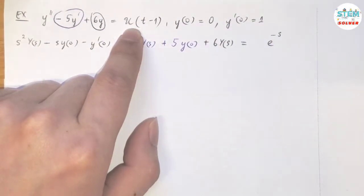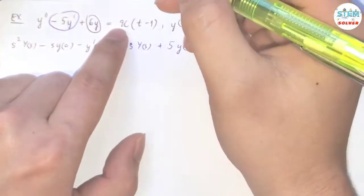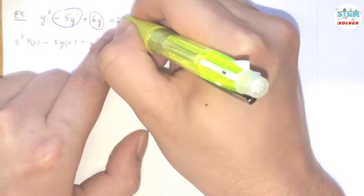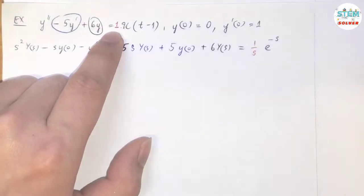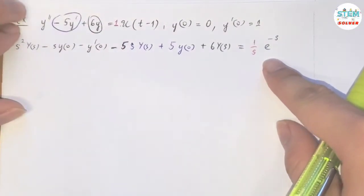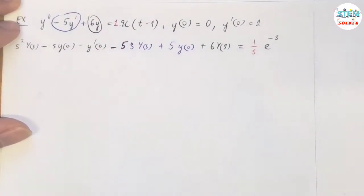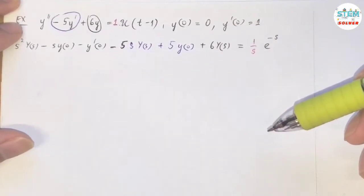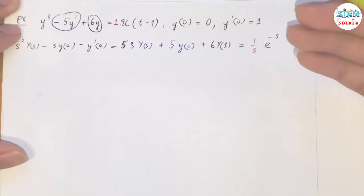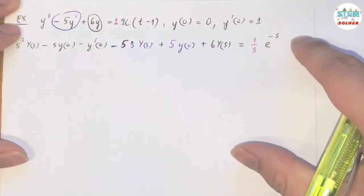Nope, be careful with just the u, because it's actually 1 times u, and the Laplace transform of this is 1 over s. So a lot of people miss this, and that causes a big issue, because it will make your problem messier as you go along.